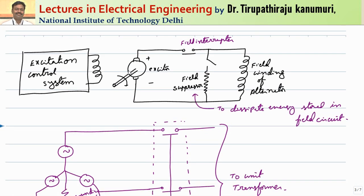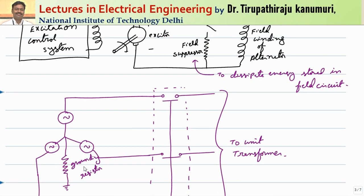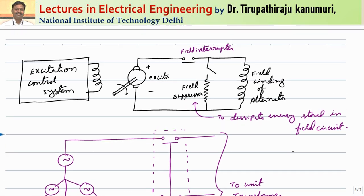Let us see the field system in detail. It will have the exciter control system supplying the field to the exciter, and the exciter will produce the EMF that supplies the field to the alternator. The alternator stator is connected in star and grounded through a resistor, which is used for controlling or decreasing the effect of ground faults in the stator. This is then connected through a circuit breaker to the unit transformer and then to the grid. Whenever a fault happens, along with the alternator circuit breakers, the field of the alternator must also be removed.